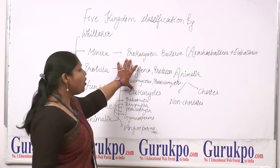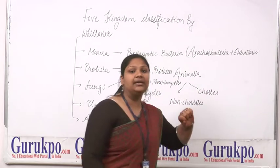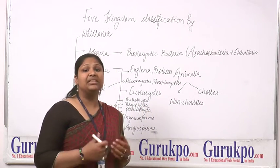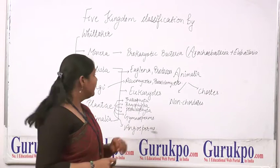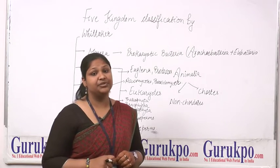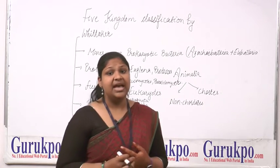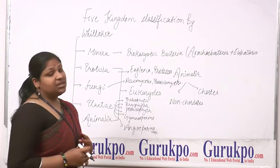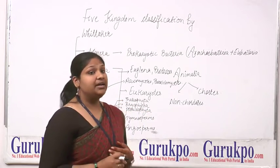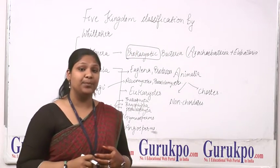Monera includes all the prokaryotic bacteria including Archaebacteria and Eubacteria. Archaebacteria are photosynthetic bacteria which can synthesize their own food using sunlight or certain chemicals, like methanogens and some chemosynthetic bacteria. Eubacteria depend on other organisms for their food. The main thing is that they all are prokaryotic, meaning their nuclear organization is very simple.